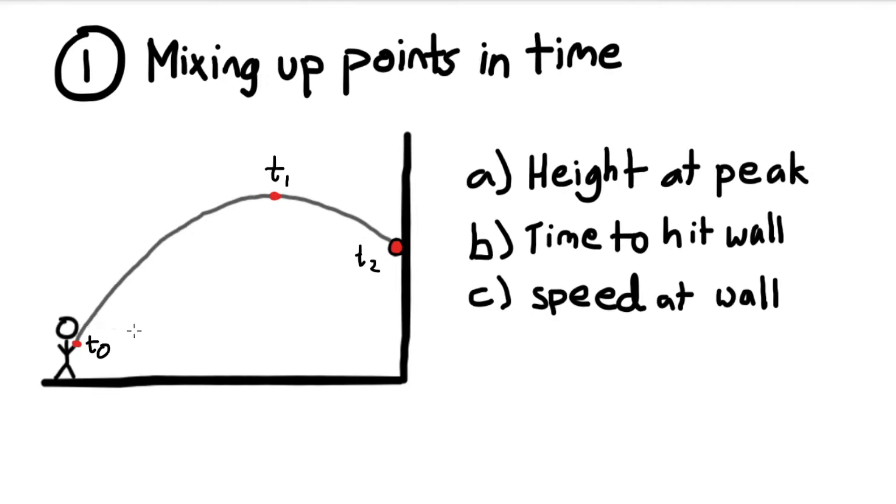So what I prefer to do instead is label each point in time with a number. So this is time 0, this is time 1, and this is time 2. Now here, I would reference this velocity y as v-y-0.